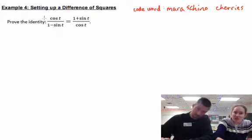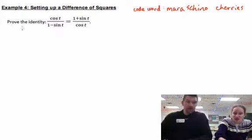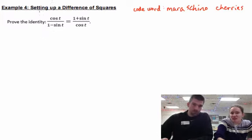On to the proofs. Okay, so prove the identity. We're gonna start with one side and get to the other. And we got a little hint here: setting up difference of squares.